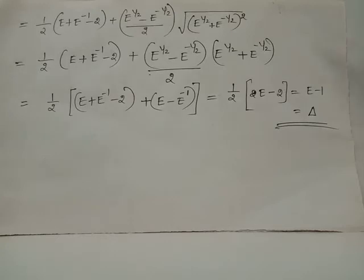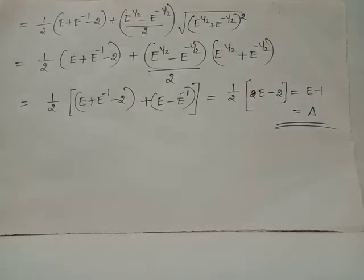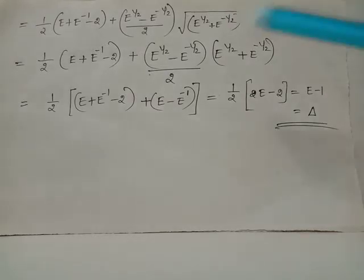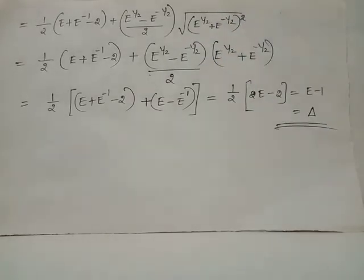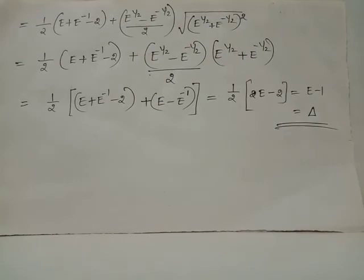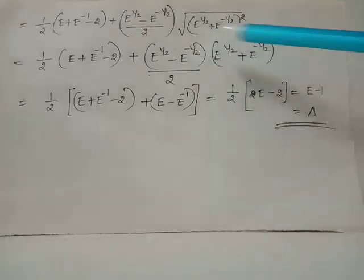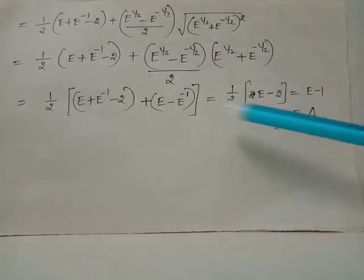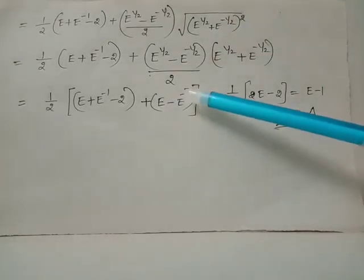When (e raised to 1/2 plus e raised to negative 1/2) whole square comes outside the square root, it becomes (e raised to 1/2 plus e raised to negative 1/2). Here the expressions are of the form (a minus b) into (a plus b), which can be written as a-squared minus b-squared. That is, when these terms are multiplied it becomes e minus e-inverse.